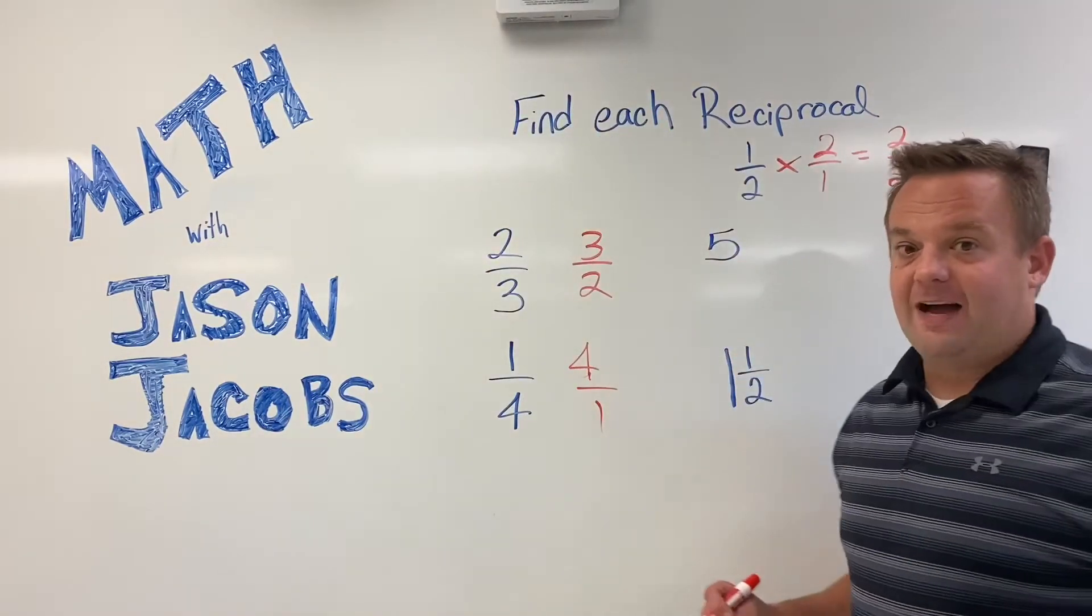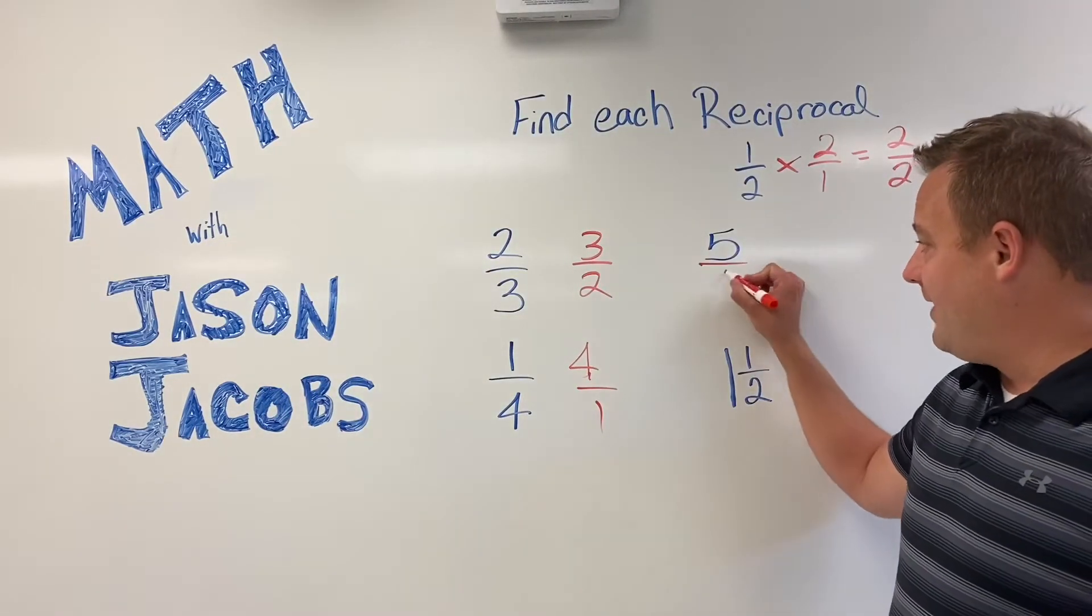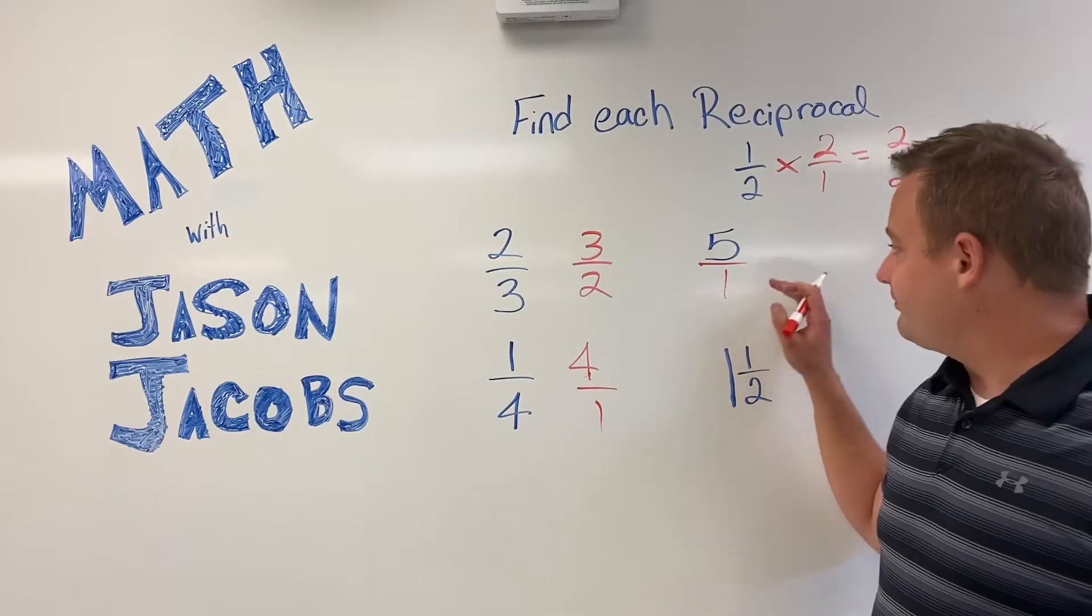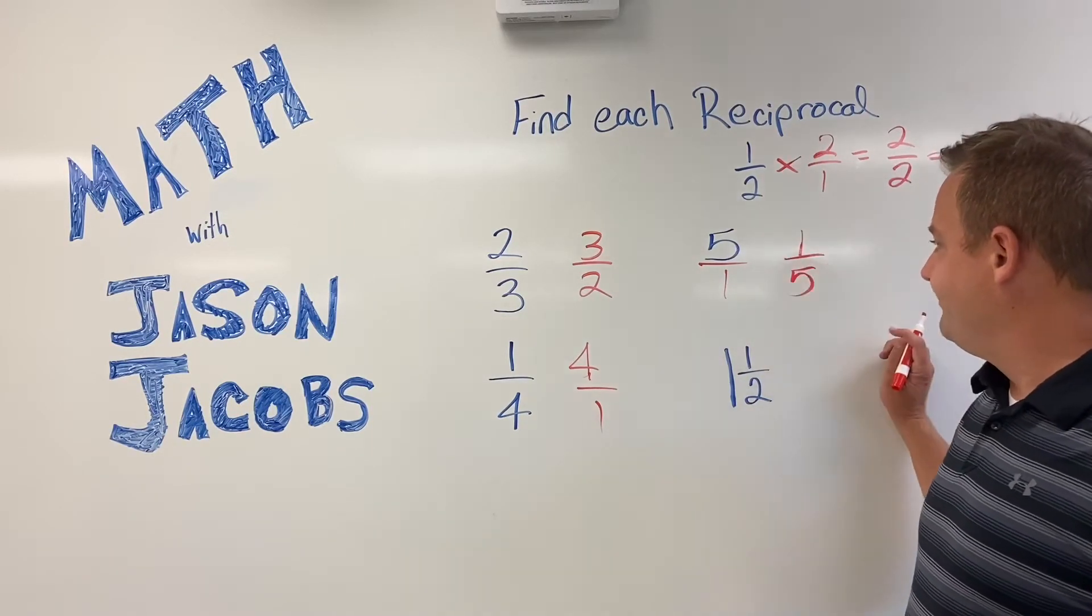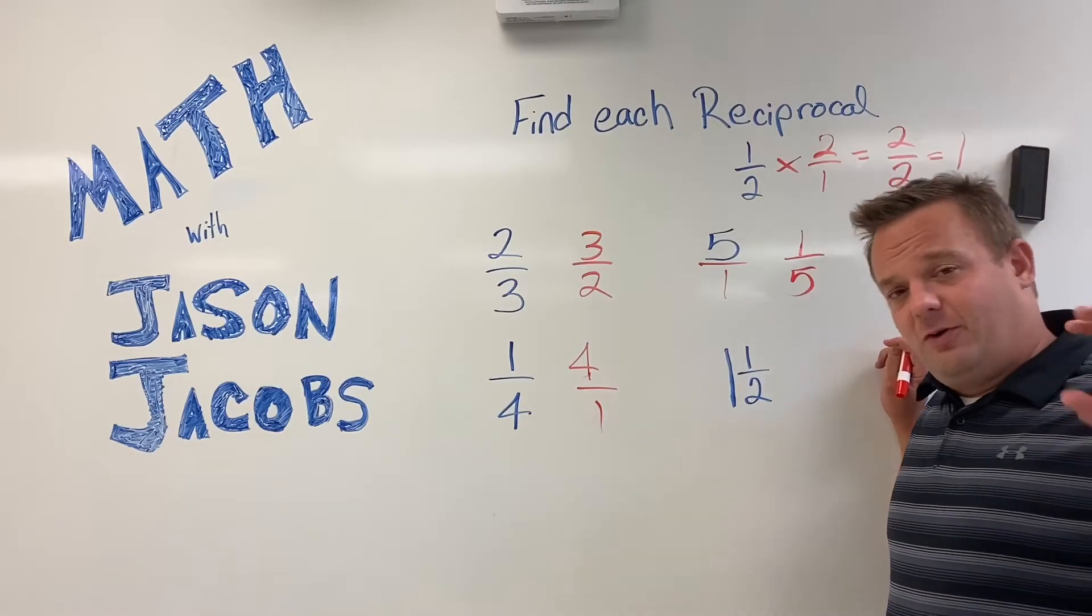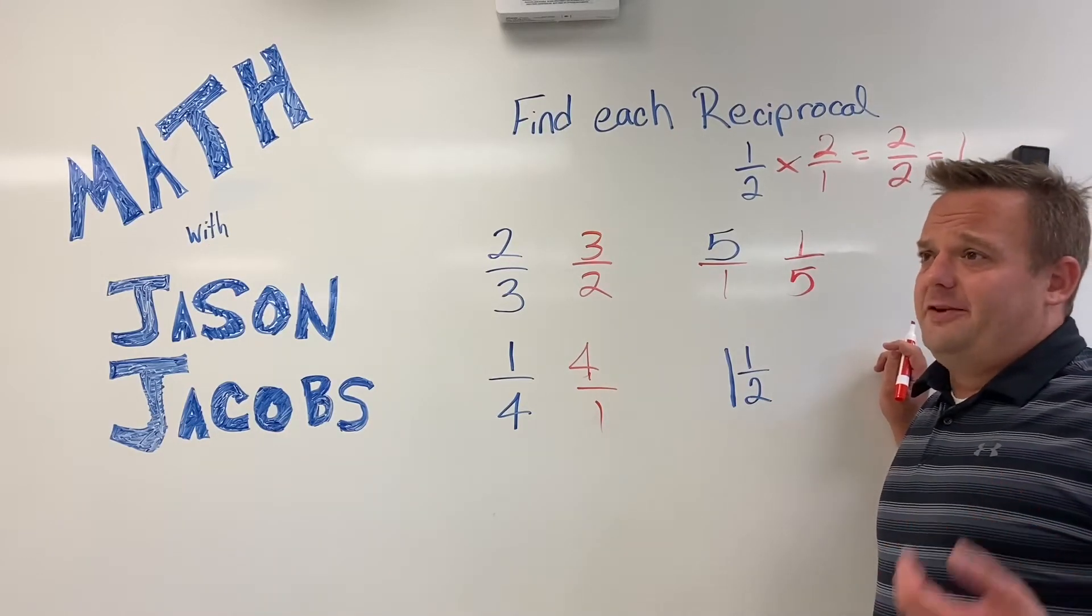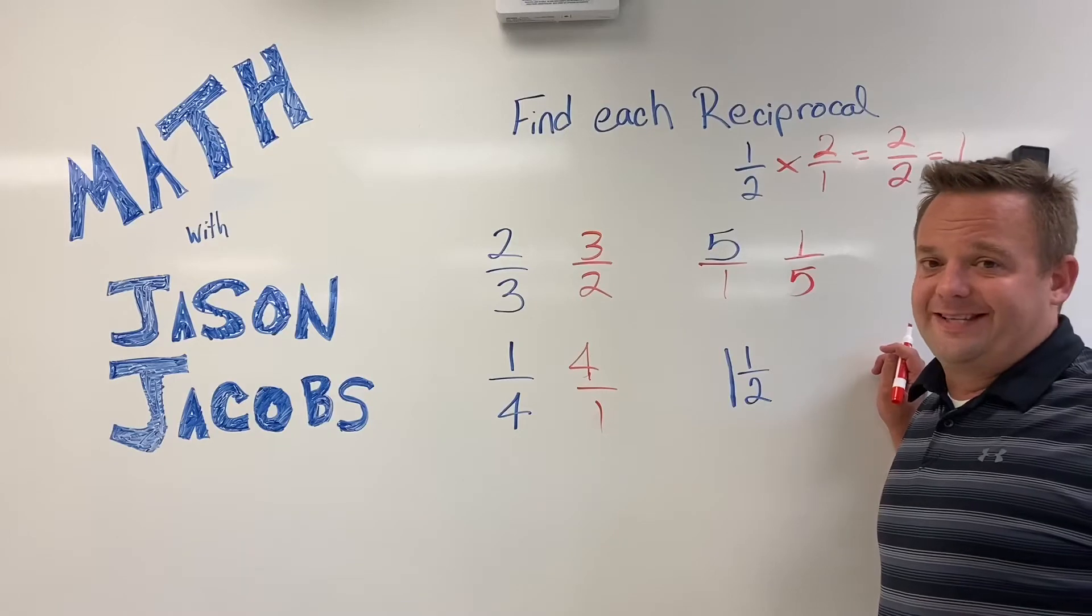What's the reciprocal of five? Well, assume that five is five over one, right? And the reciprocal of five is one fifth. Just like that. The reciprocal of six is one sixth. Make sense?